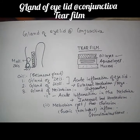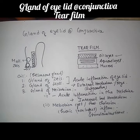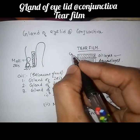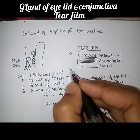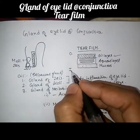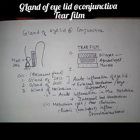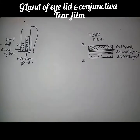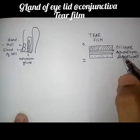To summarize, the oil layer of the tear film is secreted by modified sebaceous glands situated in the eyelid. This oil secretion forms the outer layer of the tear film, while the mucus forms the inner layer.